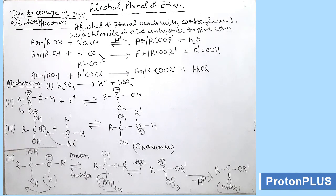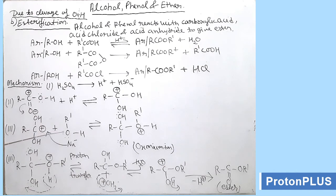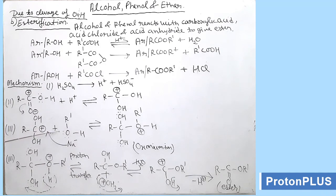This oxygen atom will attack the positively charged carbon atom, and the product formed is RCOOH with OHR' attached. This oxygen atom now has 3 valencies and will be positively charged, forming an oxonium ion.